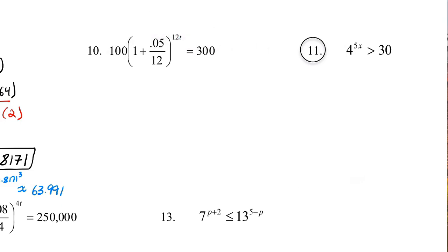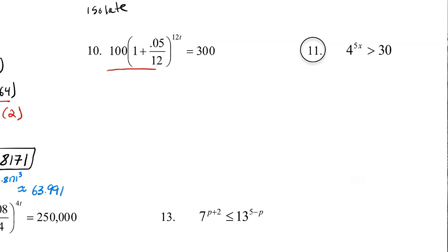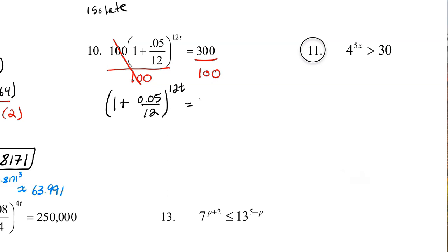So what we'd like to do is isolate the base. The base is right here — notice the exponent up here. To isolate that, we just need one step: get rid of that one hundred first. So let's divide both sides by one hundred. Those hundreds divide out, and we're left with (1 + 0.05/12) raised to the 12T equals 3.